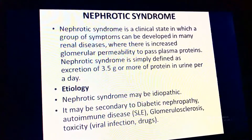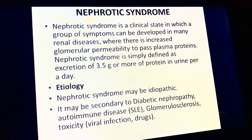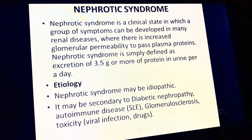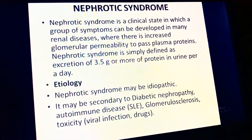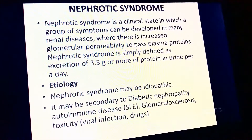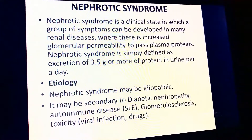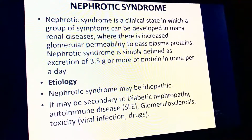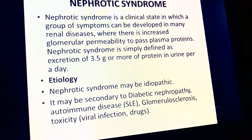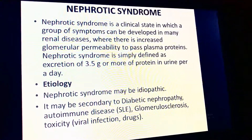Nephrotic syndrome is a clinical state in which a group of symptoms develops in many renal diseases where there is increased glomerular permeability to plasma proteins. Nephrotic syndrome is simply defined as excretion of 3.5 grams or more of protein in urine per day. Etiology may be idiopathic or secondary to diabetic nephropathy, autoimmune disease, glomerulosclerosis, toxicity, viral infections, or drugs.